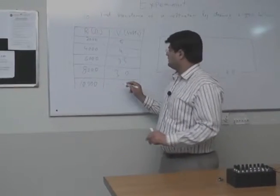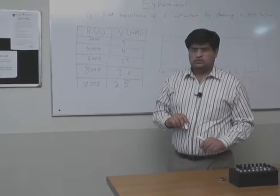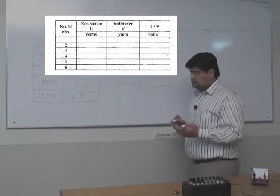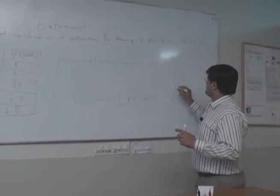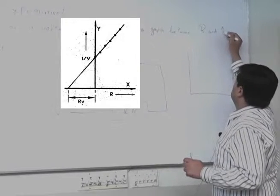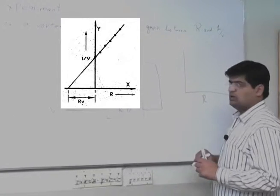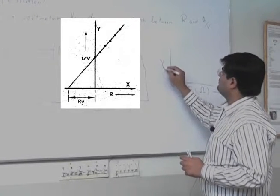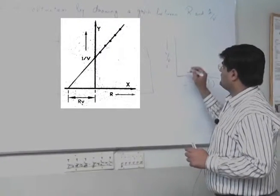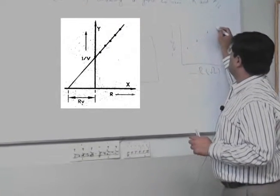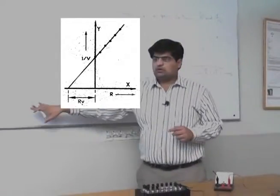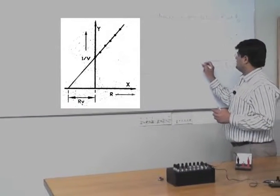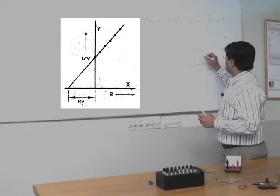In the next step, we will show in a rough way here. We will draw a graph between 1 over V and we will do resistance along X axis and then we will do 1 over V along Y axis. When we will draw points between R and 1 over V which we mentioned, which we got in our table, then we will see this kind of trend in the graph.